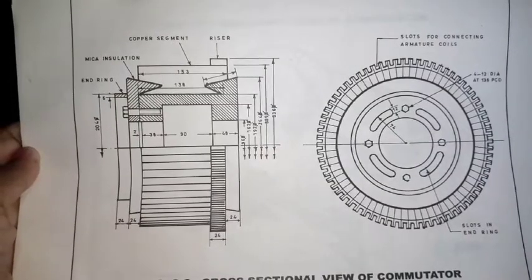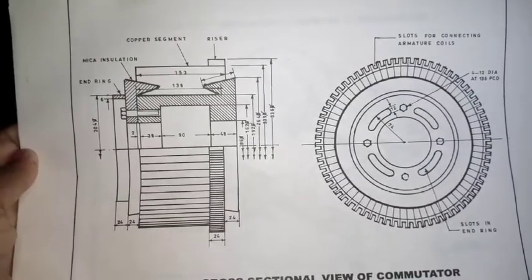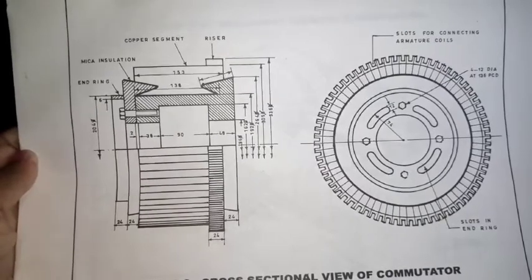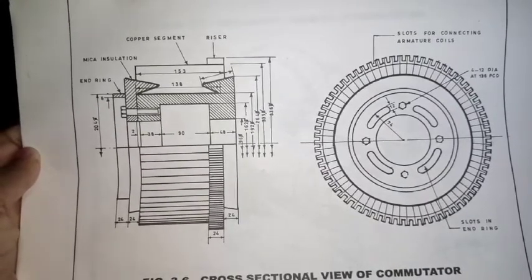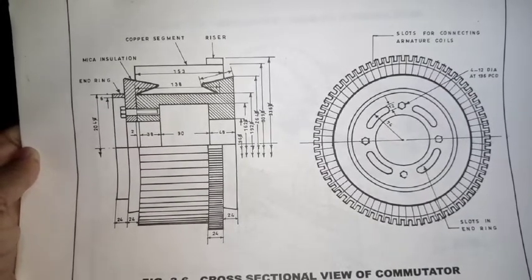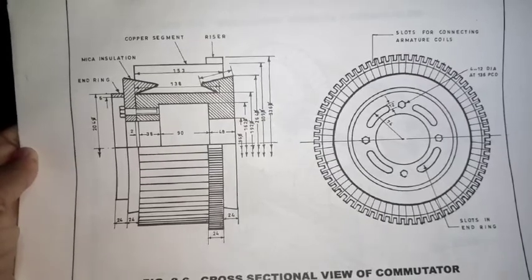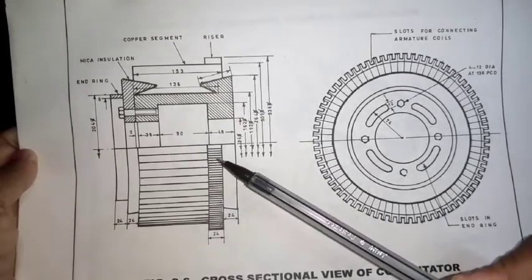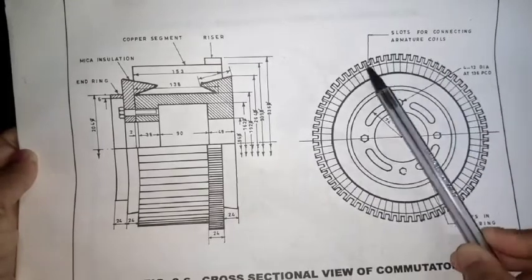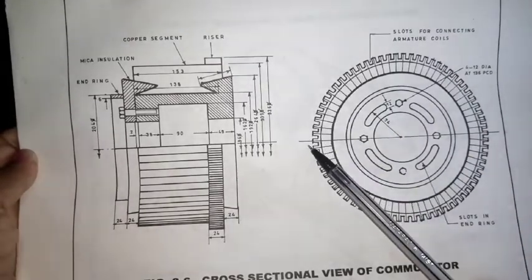This thing you have to draw in your answer sheet. In the university examination, they ask you to draw the commutator and its sectional front elevation. This is our commutator. These are the slots provided on the commutator segments.